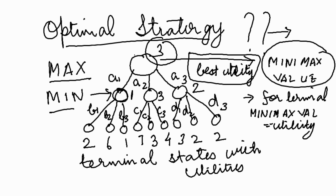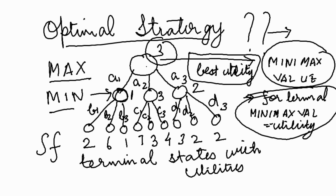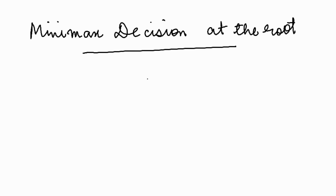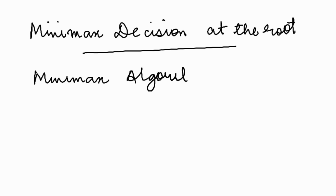This is actually the best utility value for the root node. The Minimax value for terminal states is the utility value, and the Minimax value for a node of Min is the minimum of all the successors of that node. The Minimax value at the root is the Minimax decision, and this decision leads to the successor with the highest Minimax value at the root.